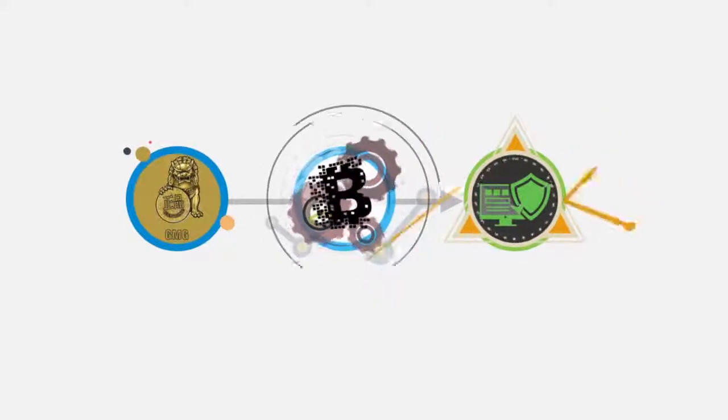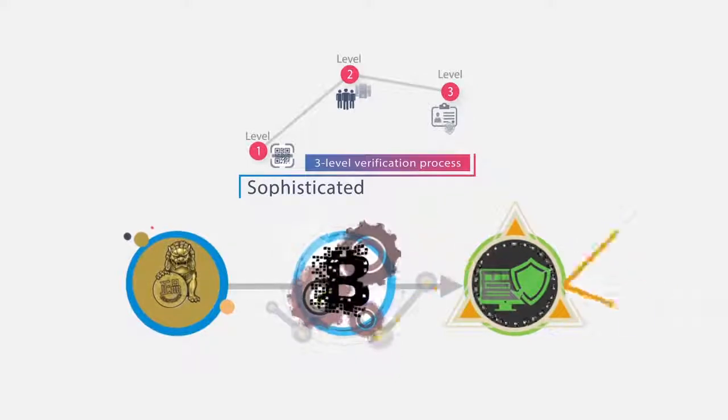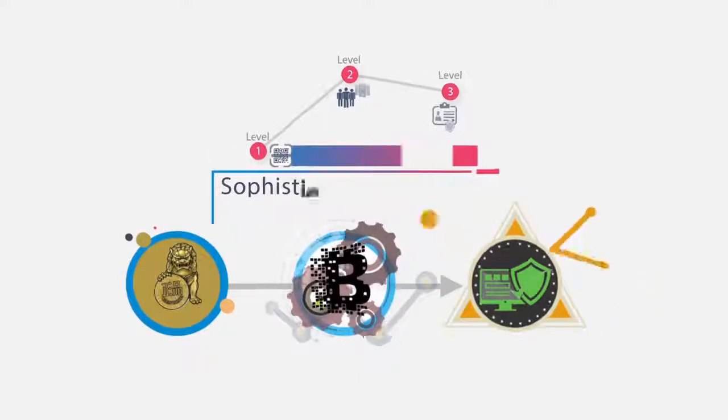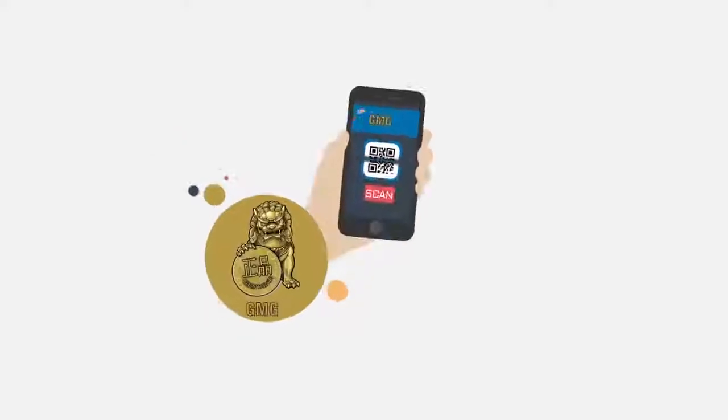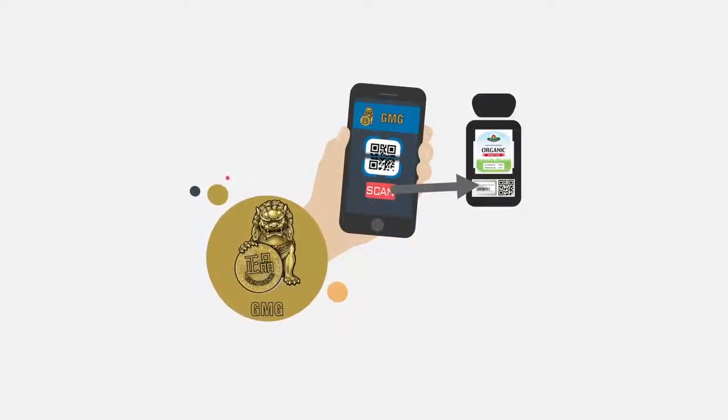Using blockchain, we have created a sophisticated three-level verification process to help consumers and manufacturers authenticate consumer goods. Our community can use our GMG phone app to scan and verify tags on products.